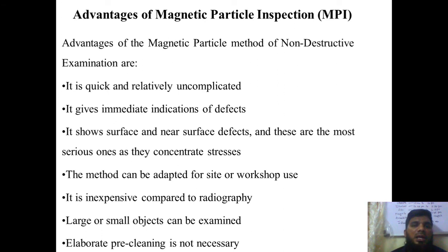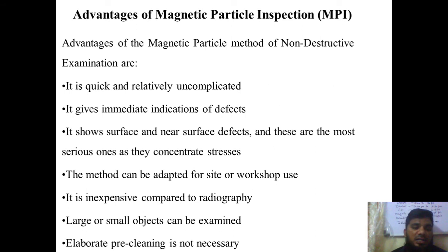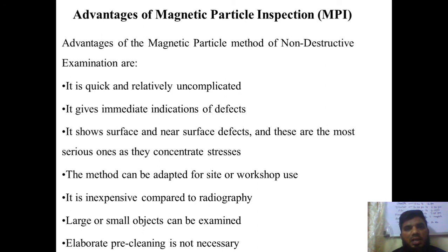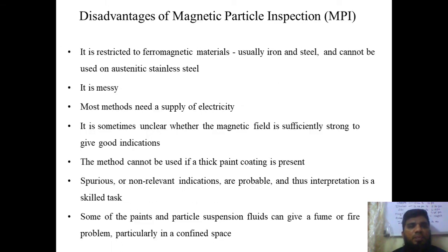Now the advantages of using magnetic particle inspection: it is very quick and relatively uncomplicated; it gives immediate indications of defects; it identifies surface or near-surface defects which are the most serious as they concentrate stresses. This method can be adopted for site or workshop use. It is inexpensive compared to radiography and other latest technologies. Large or small objects can be studied easily, and elaborate pre-cleaning is not required.